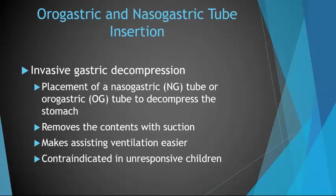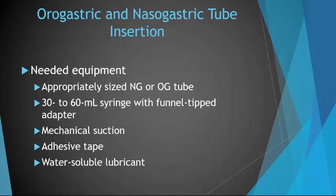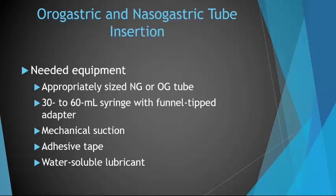In the case that you need to perform gastric decompression, this can be completed by NG tube placement or OG gastric tube placement. This is used to decompress the stomach — it removes contents with suction and makes assisting ventilation easier. However, this is contraindicated in unresponsive children. You'll want an appropriately sized NG or OG tube, a 30 to 60 milliliter syringe with a funnel-tipped adapter, mechanical suction, adhesive tape for securement, and water-soluble lubricant.